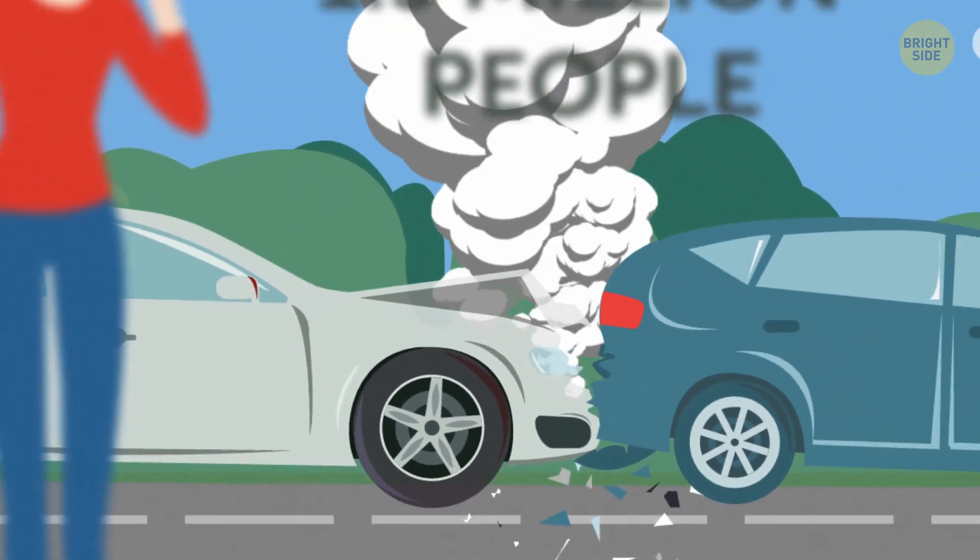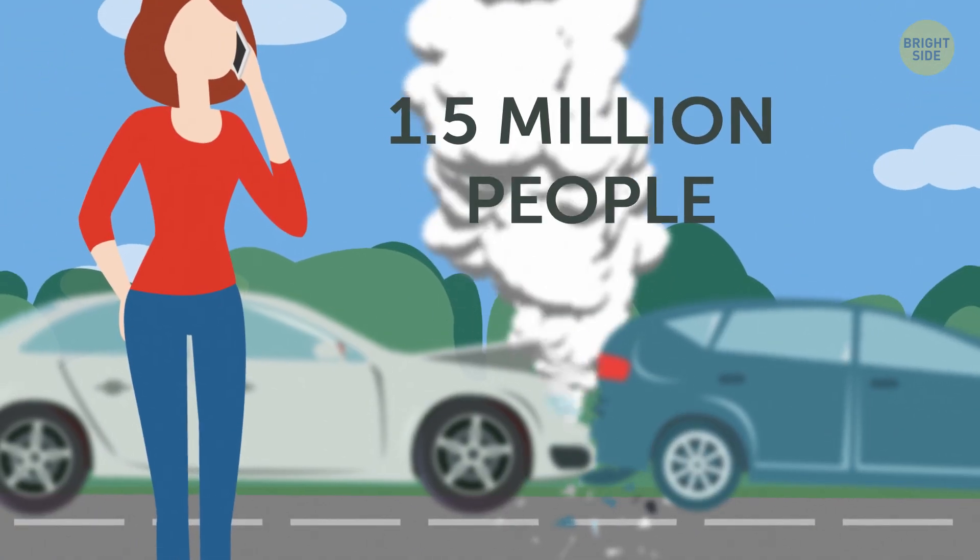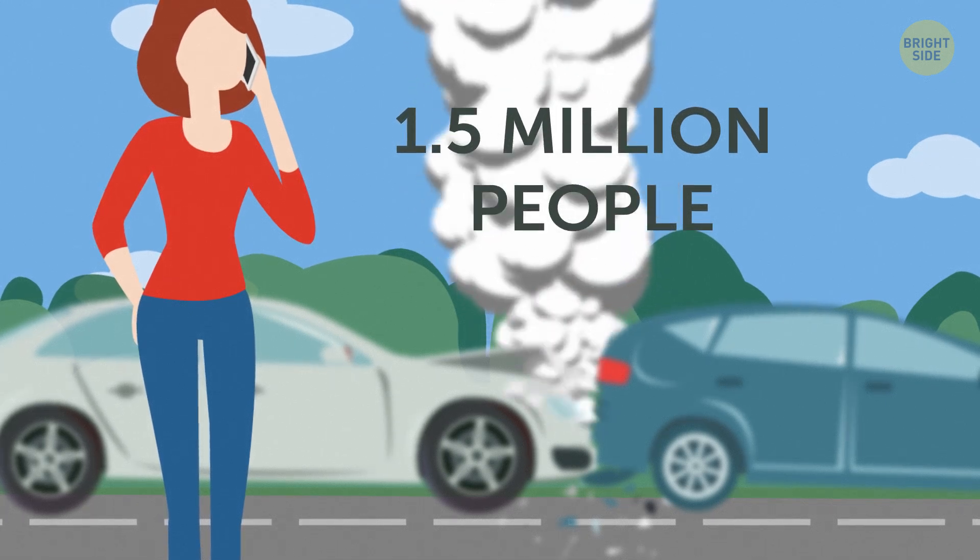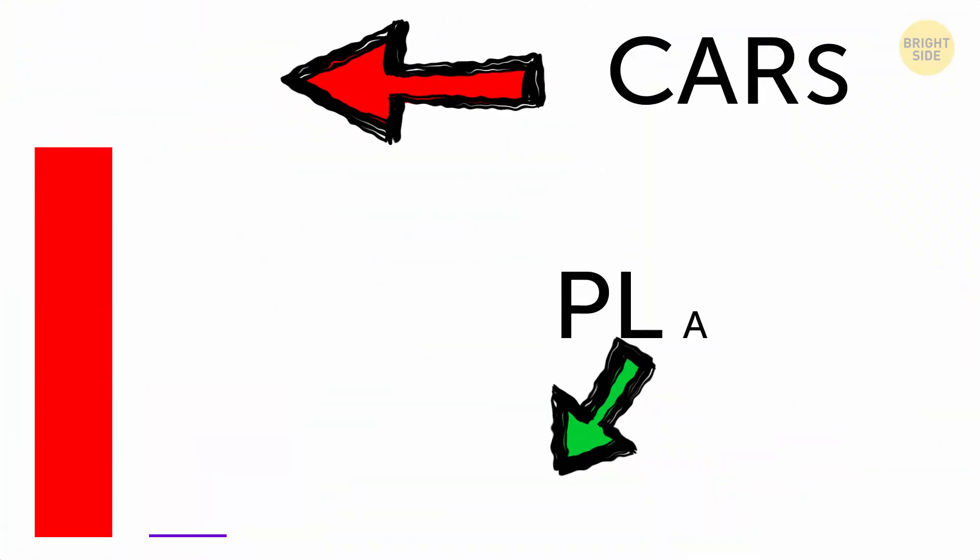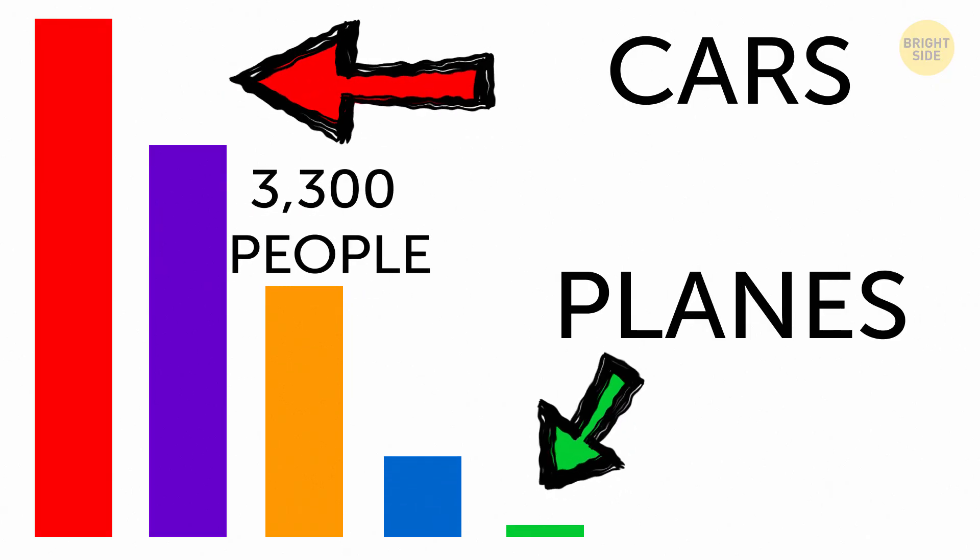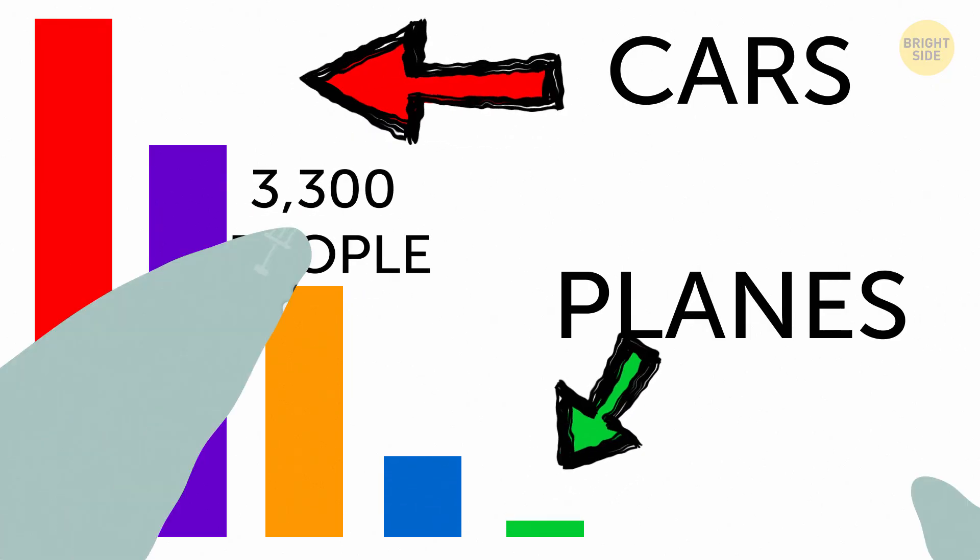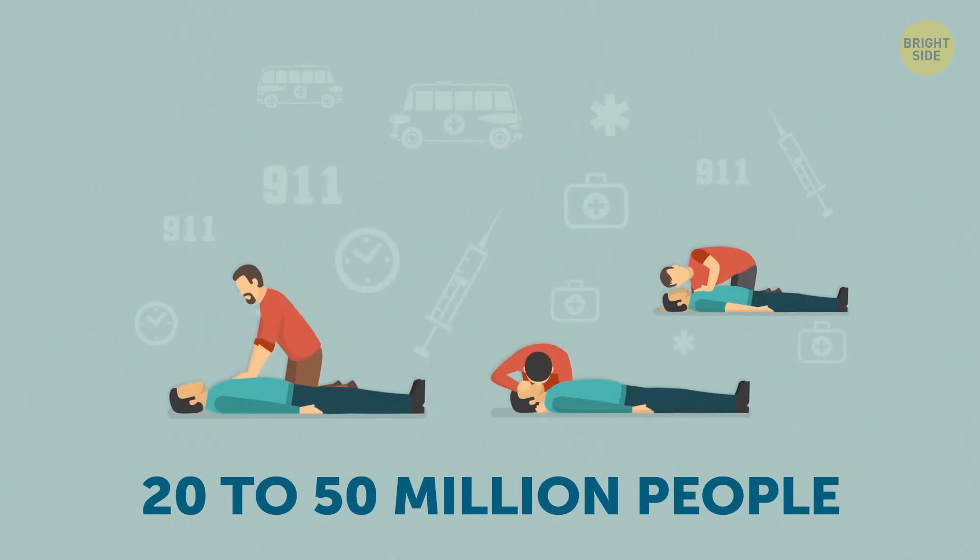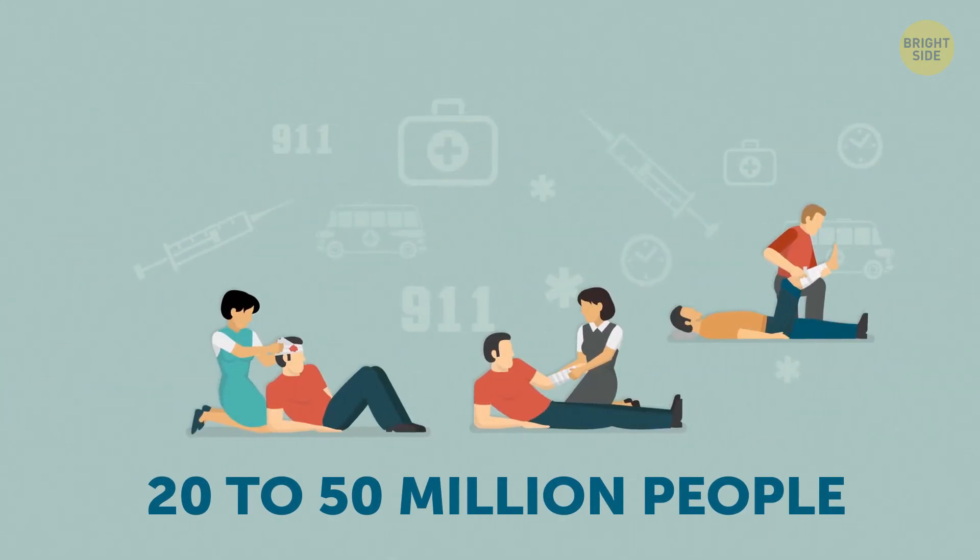In comparison, about 1.5 million people will be in a car crash and not walk away from it each year. Road crash statistics say that about 3,300 people lose their lives in car crashes daily. Apart from that, 20 to 30 million people get injured in car crashes every year.